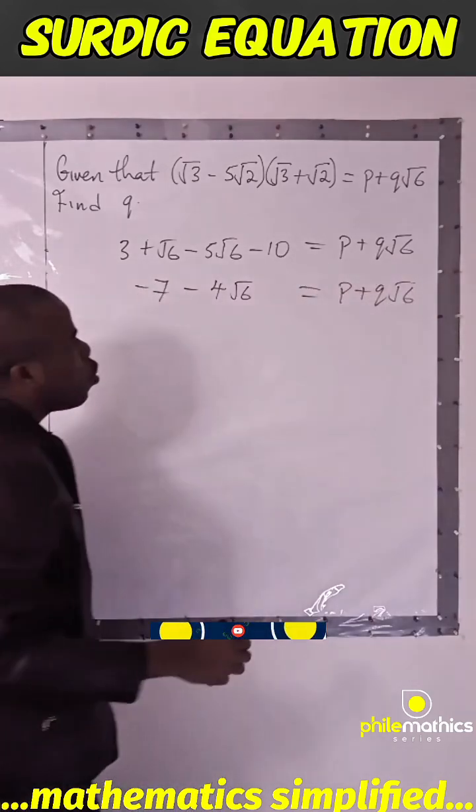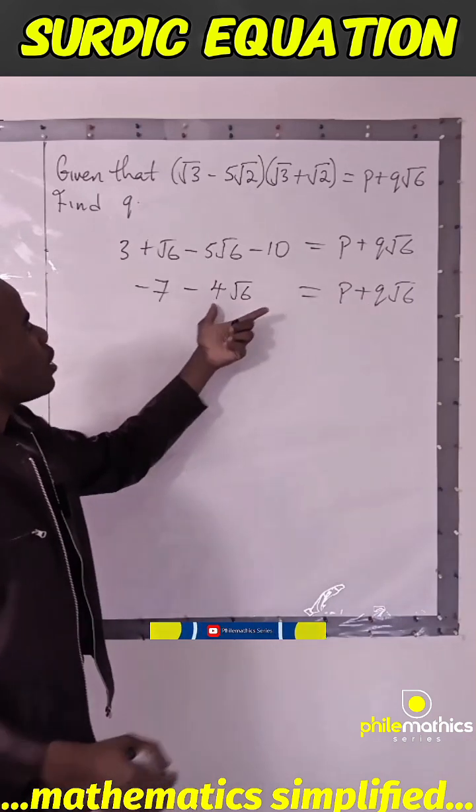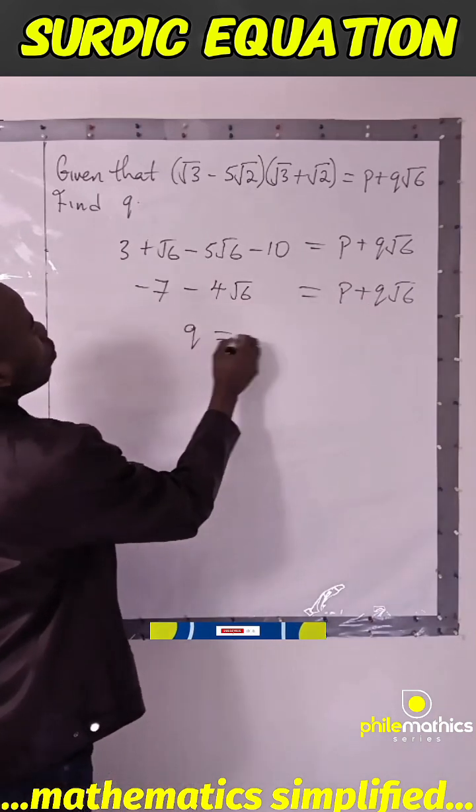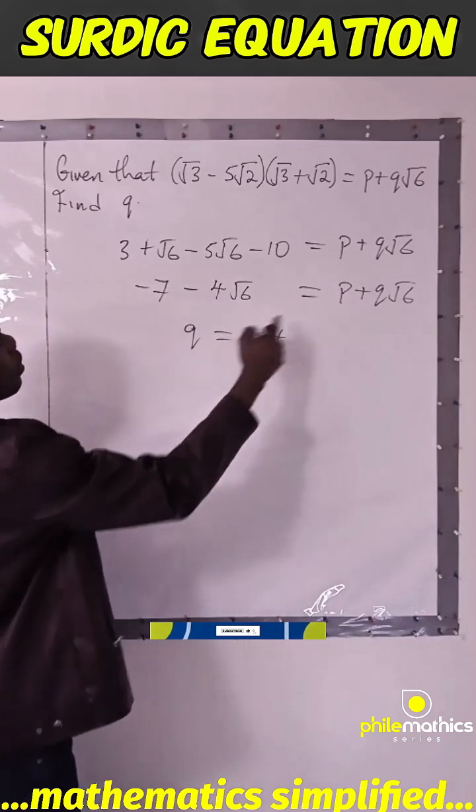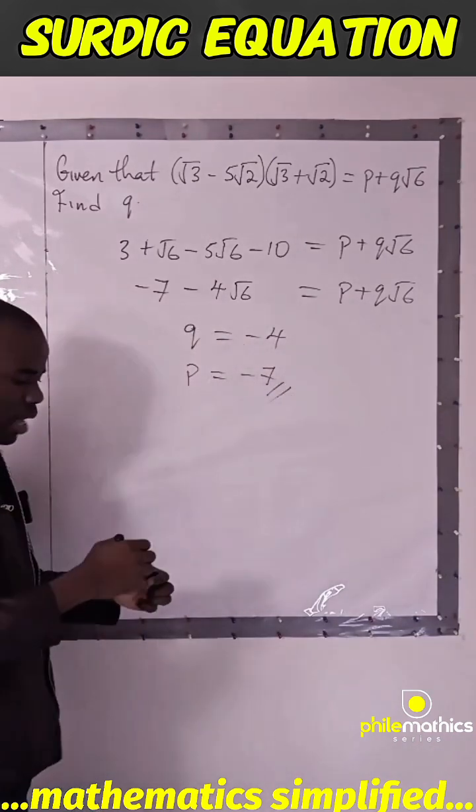So we have to compare coefficients. To find what q is, q will be minus 4 and p will be minus 7. So these are the answers. Thank you for watching.